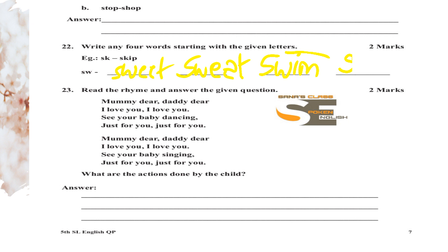Read the question twice and then answer it. The question asks: what are the actions done by the child? In this rhyme, two actions are done by the baby — dance and sing. So you can write: 'The actions done by the child are dancing and singing.'